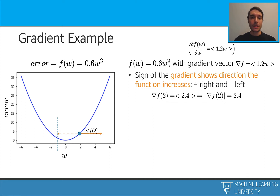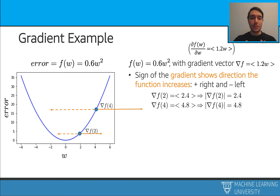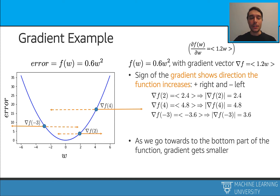The first thing we realize is that this gradient is positive. It means that when we are going to the right of 2, the function is actually going to increase. Similarly, plugging in 4 gives us another positive number, meaning the function increases going towards the right. If I use minus 3, I get a negative number, which means the function is going to increase when going towards the left. This is correct because as we go further left, the function also gets larger.